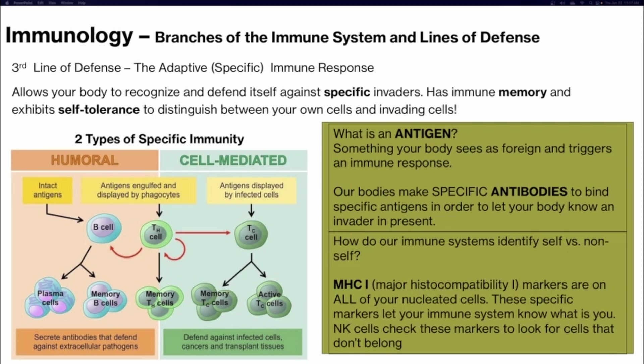How do our immune systems identify self from non-self? We have MHC1 — major histocompatibility complex 1 — receptors or markers on all of our nucleated cells, which lets your immune system know what's you and what's foreign. This is what natural killer cells are checking to make sure all of your cells belong in your body.